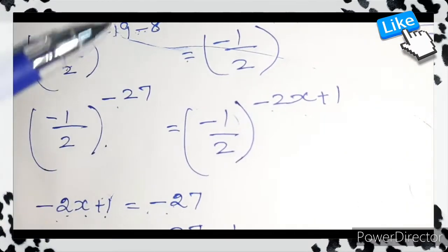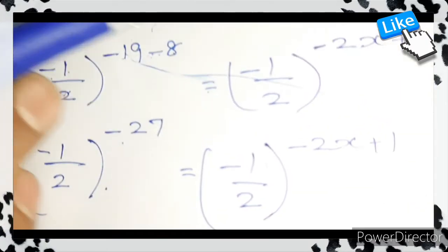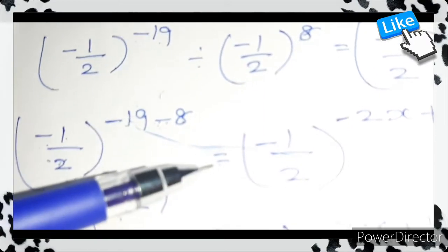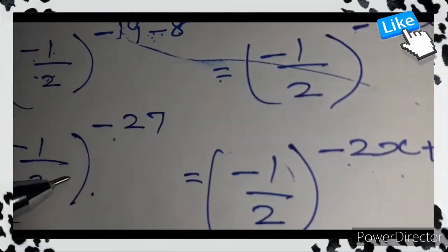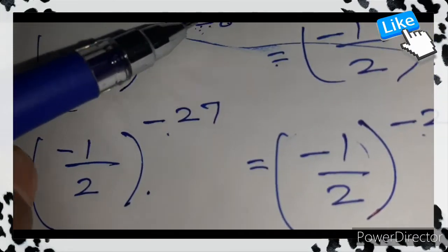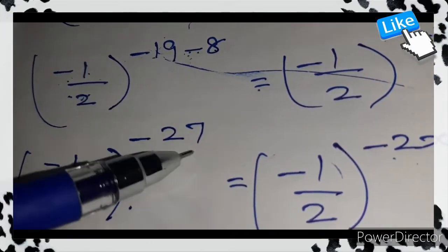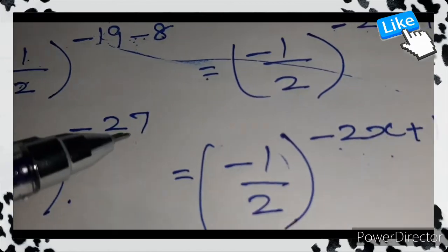(-1/2)^(-19-8) = (-1/2)^(-2x+1). Now, minus 19 minus 8, it is minus minus, so we have to add and put the sign. That is -27.